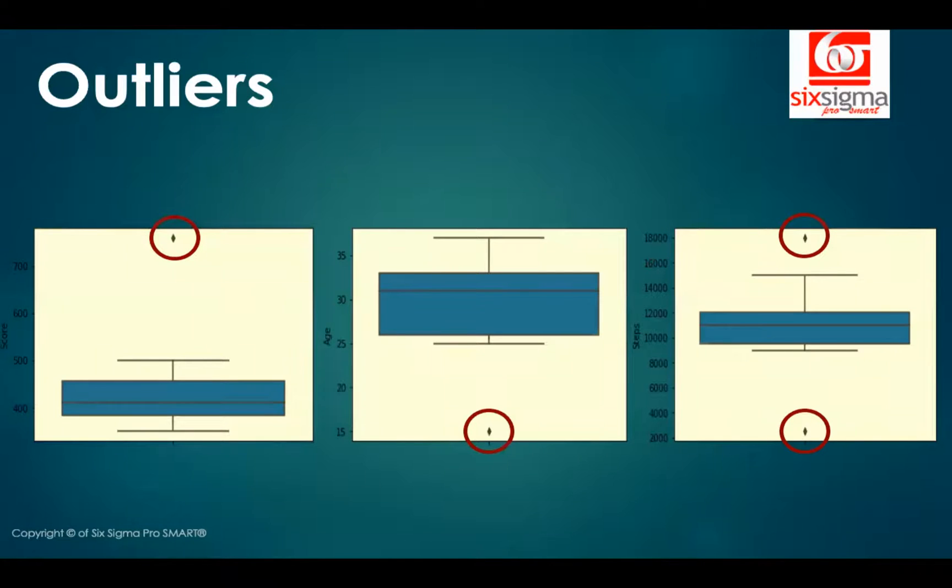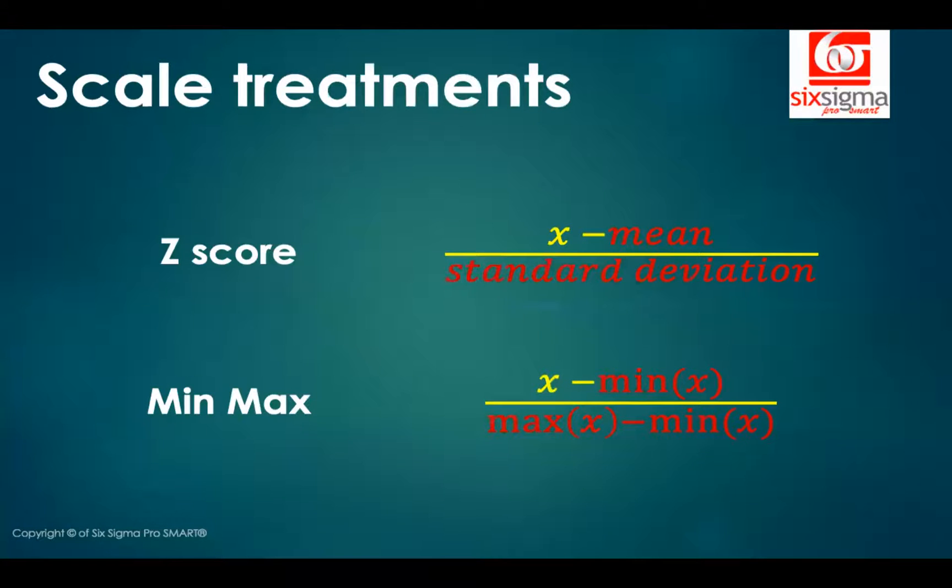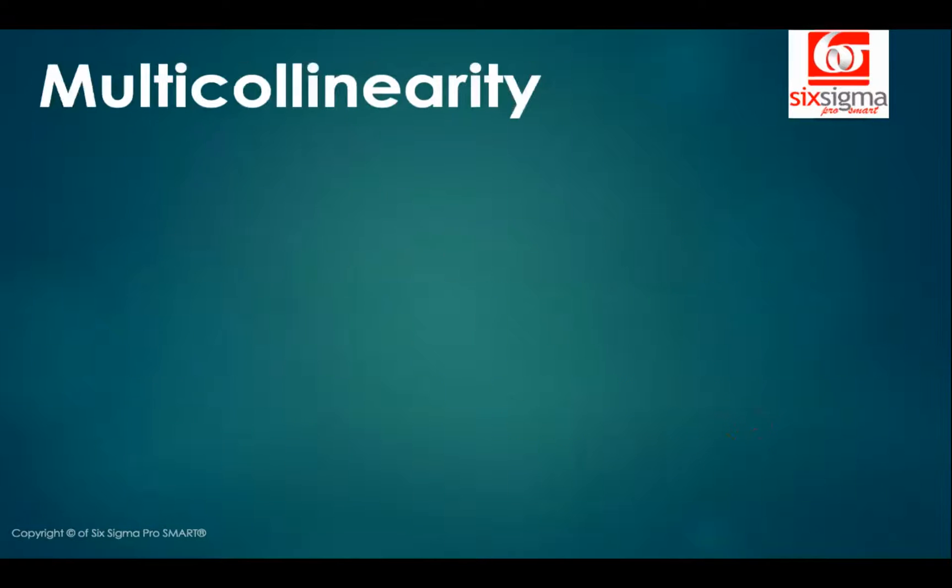Recollect your box plots. What will be the minimum and maximum values in this case? Of course, the outlier values. And that's why it is not a good idea to do any kind of scaling. Even the min-max scaling would be a problem when you have outliers present in your data. But what about the multicollinearity?